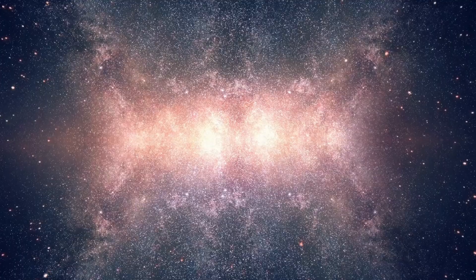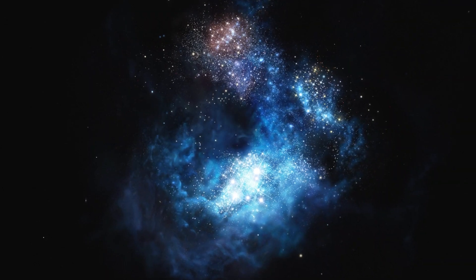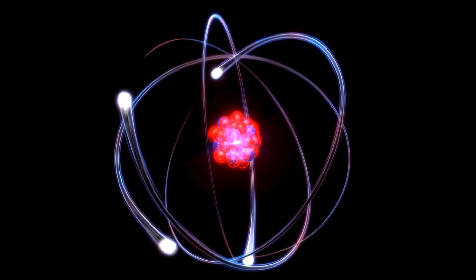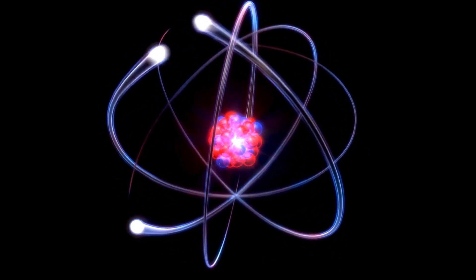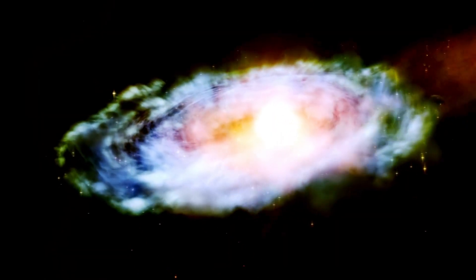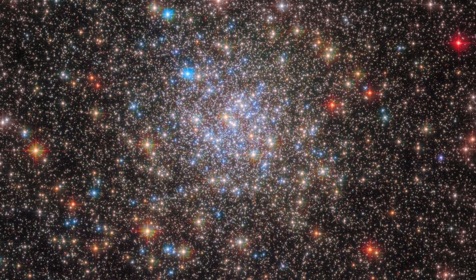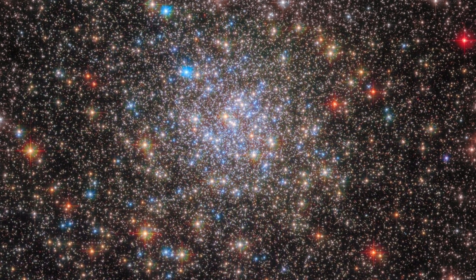In the cosmic history, population three stars were the first, massive and hot, converting hydrogen and helium into heavier elements. Their supernova seeded the universe with these elements, paving the way for population two and then population one stars like our sun.